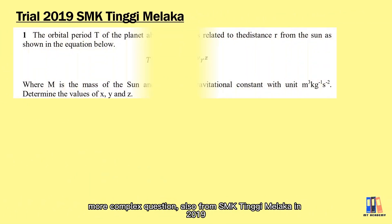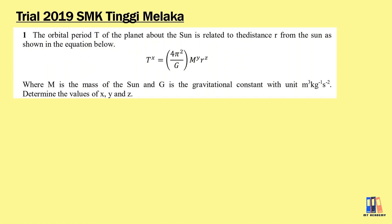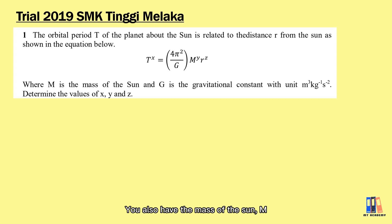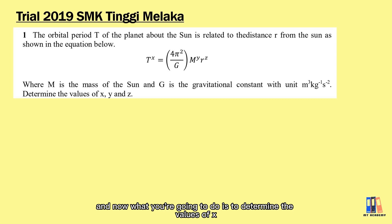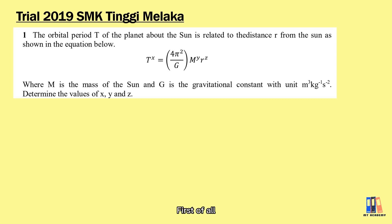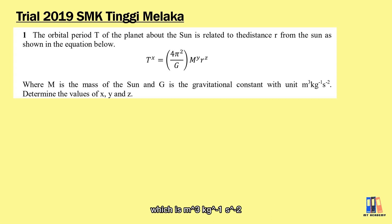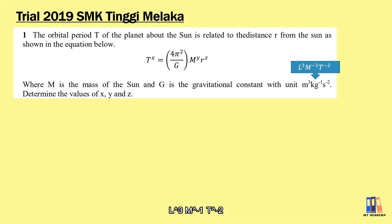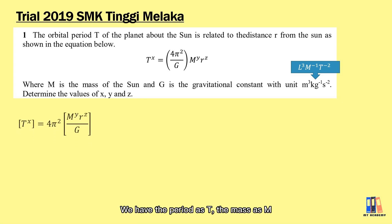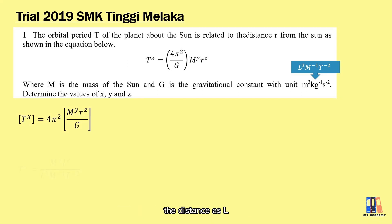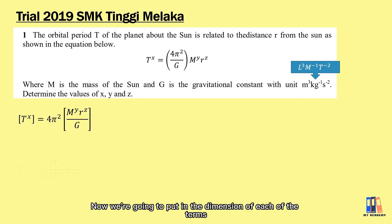Now we try a more complex question from SMK Tinggi Melaka in 2019. The orbital period T of a planet about the sun is related to the distance r from the sun as shown in the equation. We also have the mass of the sun m and the gravitational constant g, which we discussed in the previous video. We need to determine the values of x, y, and z. Note that 4 pi squared has no dimension, and the dimension of g in terms of units is meters cubed per kilogram per second squared, which in dimensional form is L cubed per M per T squared. We will determine the dimension of each term in the equation.